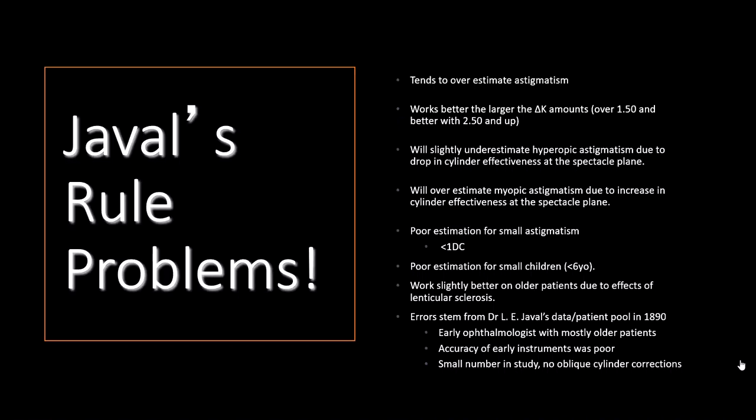It works better on older patients who have some lenticular changes but not severe ones. This error stems from Javal's initial data back in the 1890s, where he was mostly working with older patients, the accuracy of the instruments was poor, and it had a relatively small sample size or small number of patients in the study.